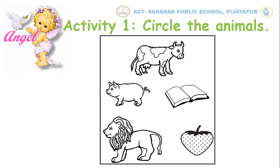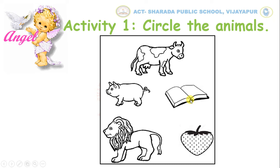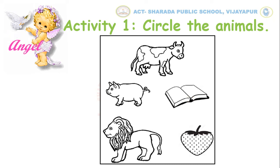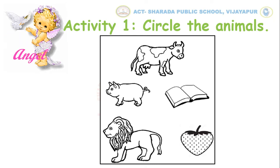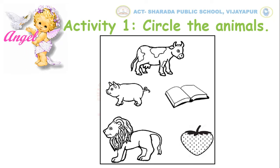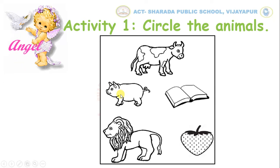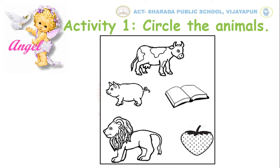For example, kids, tell me what is this? This is a book. Is it an animal? No. So we will not circle it. Let us take another one. This is a pig. Pig is an animal. Yes. So we will circle it like this.